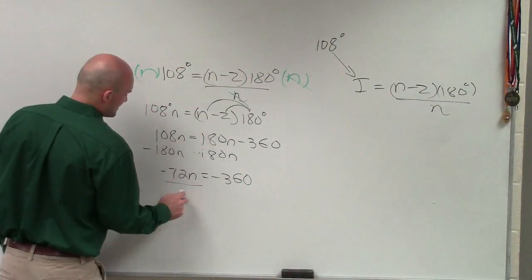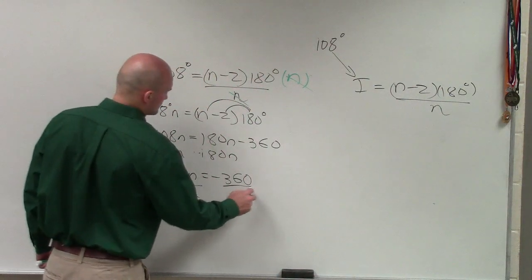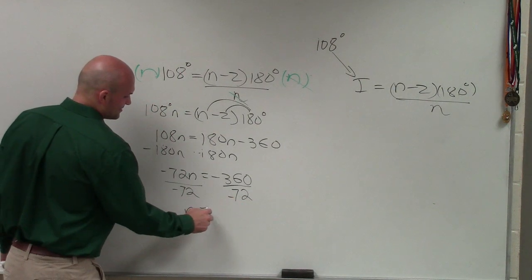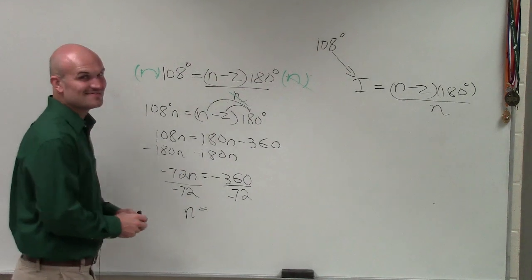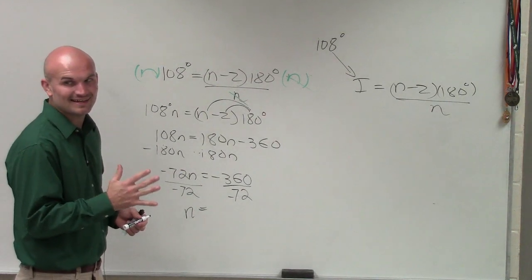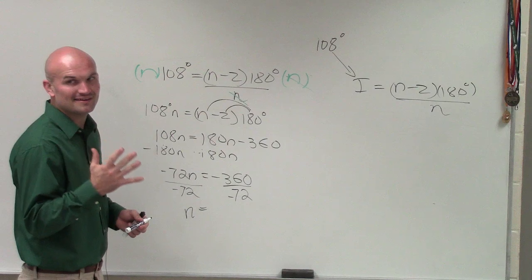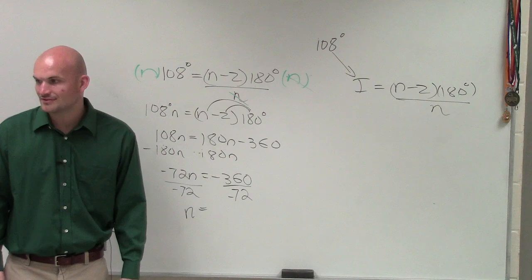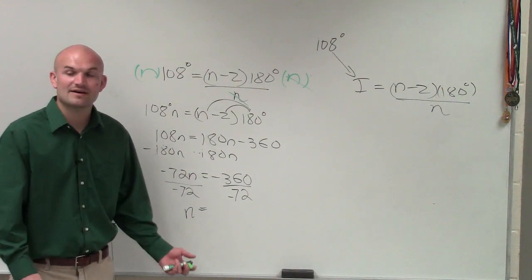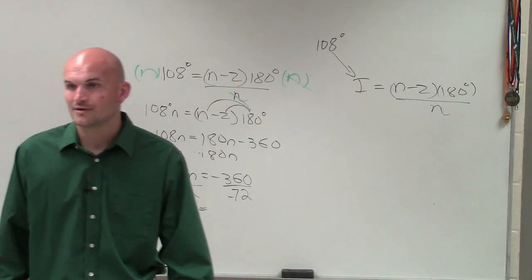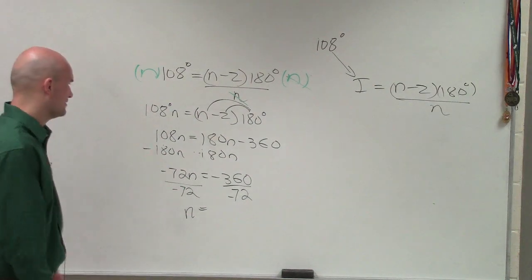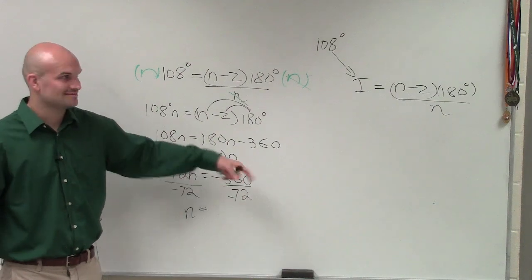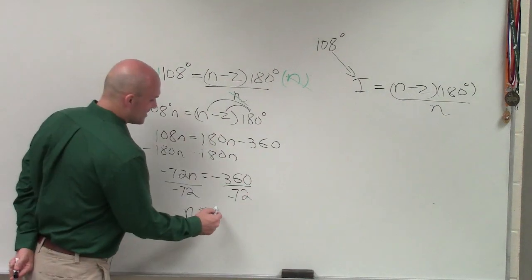Then I'll just divide by negative 72. And therefore, n equals? Anybody? Well, what is 7 times 5? 35. So 5 times 70 would be 350. Then you have a 2. 5 times 2 is 10. 360. So n equals 5.